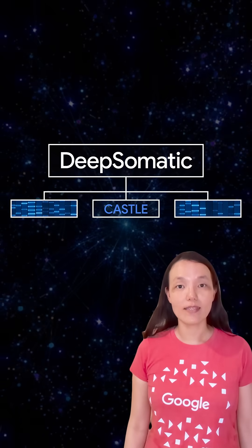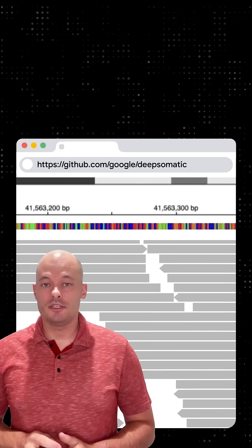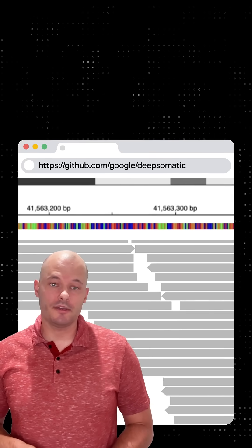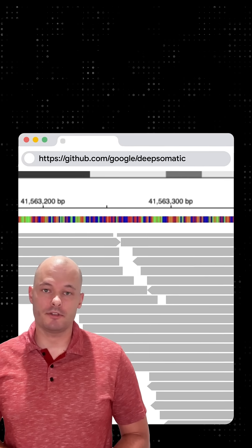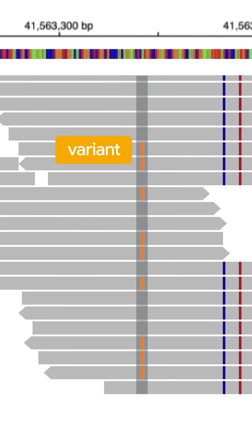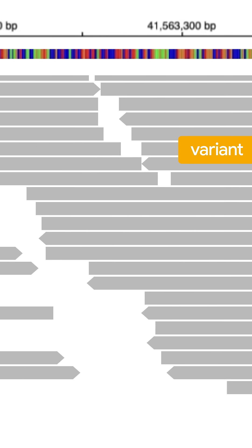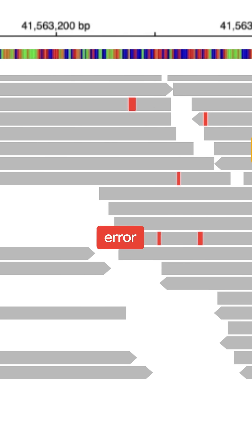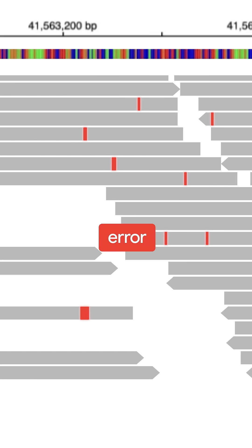DeepSomatic is really good at spotting the difference between an actual genetic variant and an artifact, or error, that was introduced during the sample preservation process. That's pretty huge.